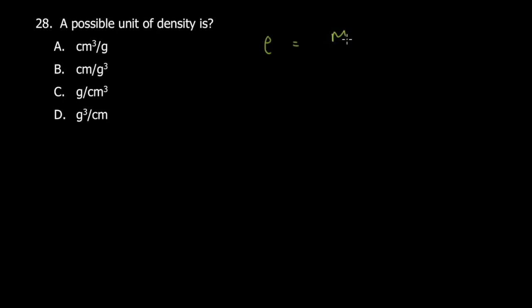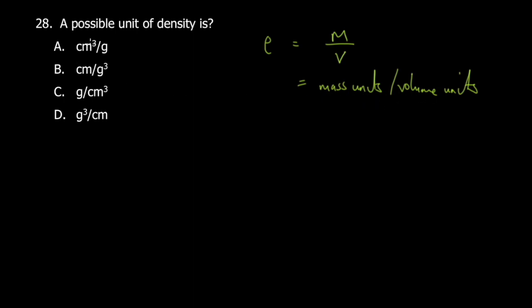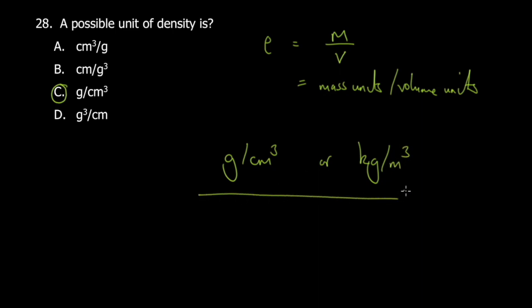Question 28: the possible unit of density. Density equals mass over volume (ρ = m/V), so you need mass units per volume units. Grams per cubic centimetre (g/cm³) is correct — it's a mass unit over a volume unit. Common units for density are g/cm³ or kg/m³, and you should know how to convert between them.